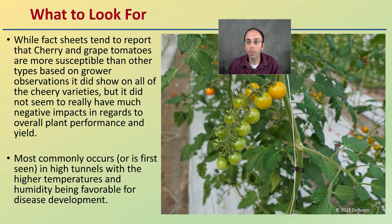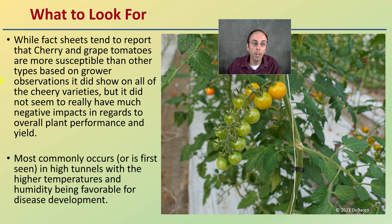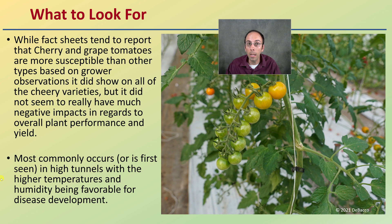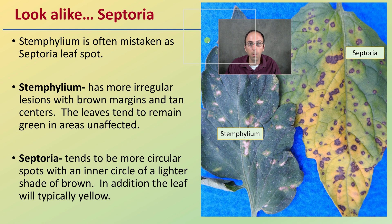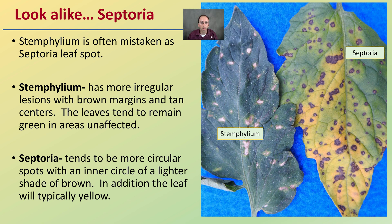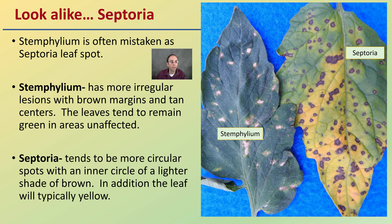Hopefully you liked that grower interview. Do keep in mind that fact sheets tend to report that cherry and grape tomatoes are more susceptible than other types. Based on this grower's observation, it did show on all the cherry varieties but did not seem to have much negative impact on overall plant performance or yield. It most commonly occurs — or is at least first seen — in high tunnels, where higher temperatures and humidity are favorable for disease development. The grower initially thought it looked like Septoria, which is a common lookalike.